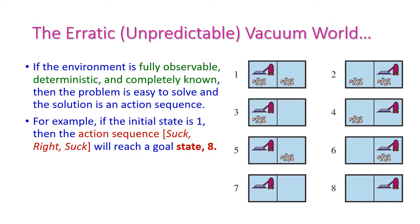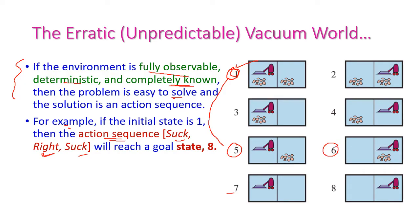If this vacuum world environment is fully observable, deterministic, and completely known, then we can easily solve this problem and reach the goal state. For example, if the initial state is 1, we can apply the action sequence: suck, right, and suck. From state 1, we apply suck to reach state 5, then move right to reach state 6, then suck to reach state 8, which is our goal state.